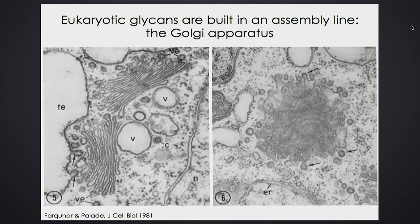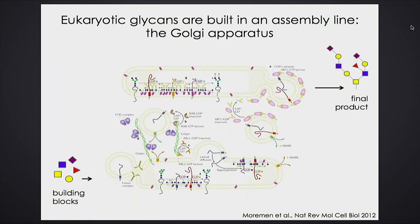These glycans are built in a very intricate way in the Golgi apparatus — a famous organelle of eukaryotic cells, originally identified by Camillo Golgi. The Golgi has a remarkable morphology: a series of plates or pancakes stacked on top of each other. The entire process by which sugar polymers are made happens inside this stack, which forms a sort of factory production line. These plates are called cisternae.